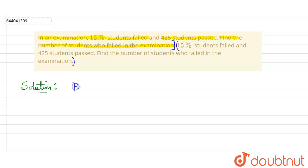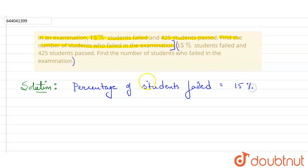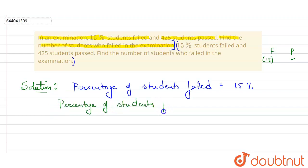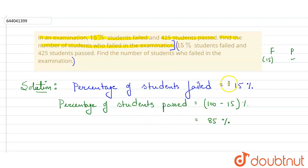The percentage of students who failed is given as 15 percent. There are only two cases: either fail or pass. If the fail percentage is 15, we can find the pass percentage because the total percentage is always 100. So percentage of students passed equals 100 minus 15, which is 85 percent.